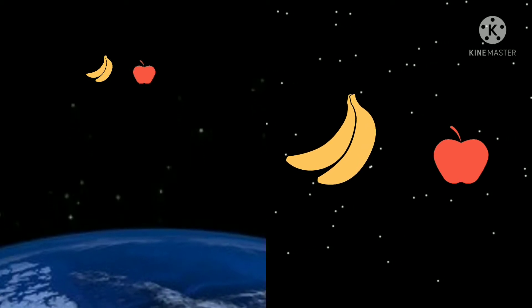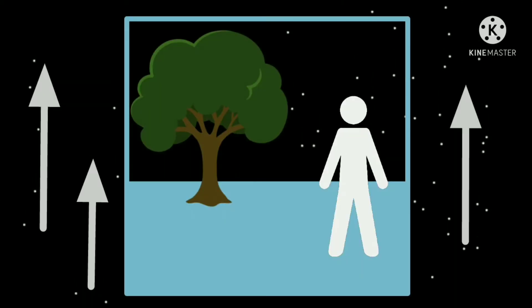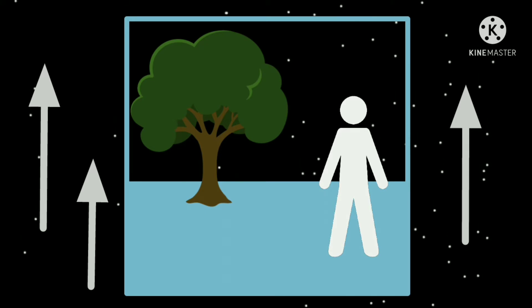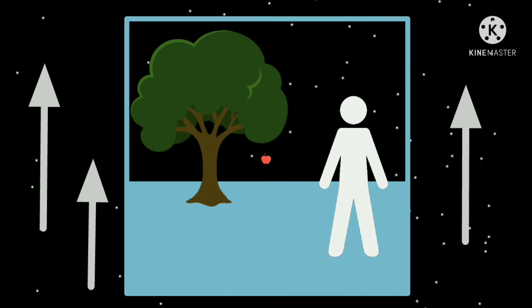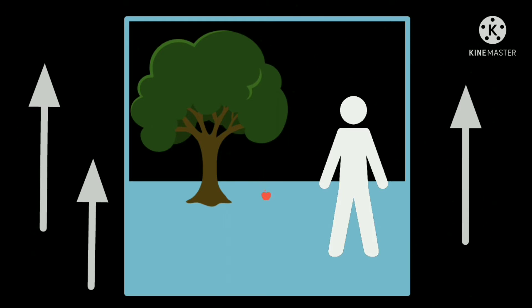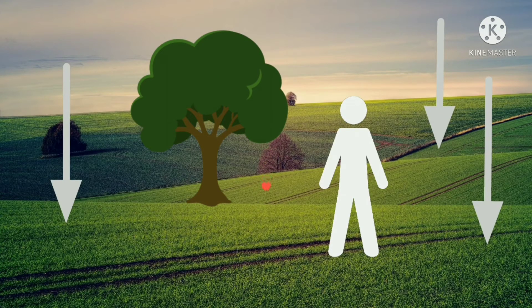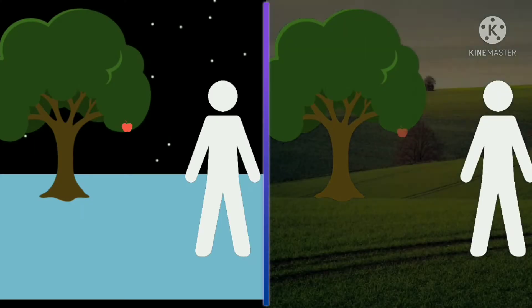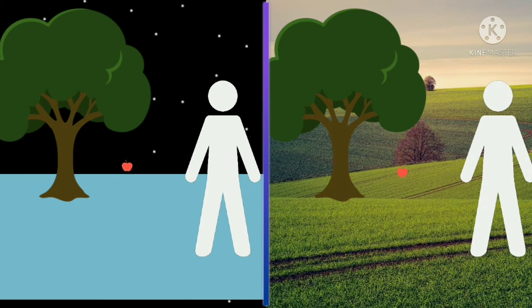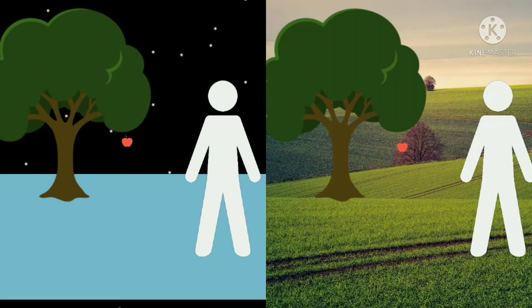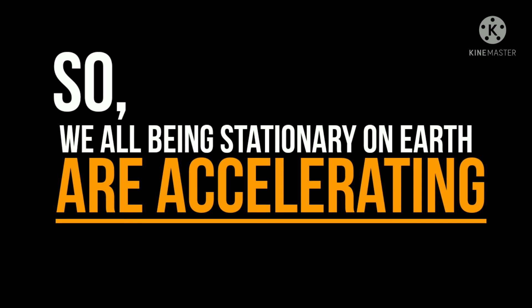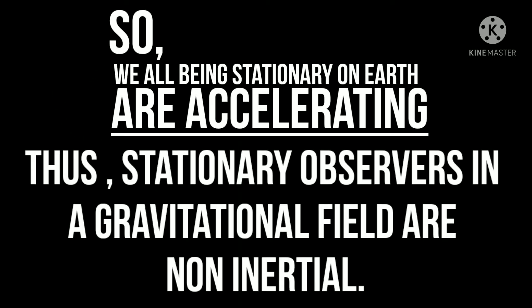Now imagine you are in a room that is accelerating at 9.8 meters per second squared in the upward direction. The physics you observe would be exactly similar to the physics in a situation where the room is at rest on the surface of Earth. Every experiment done in either scenario would yield identical results — these two situations are indistinguishable. That means being on the surface of Earth is physically the same as accelerating at 1g. So we, being stationary on Earth, are accelerating, and thus stationary observers in a gravitational field are non-inertial.